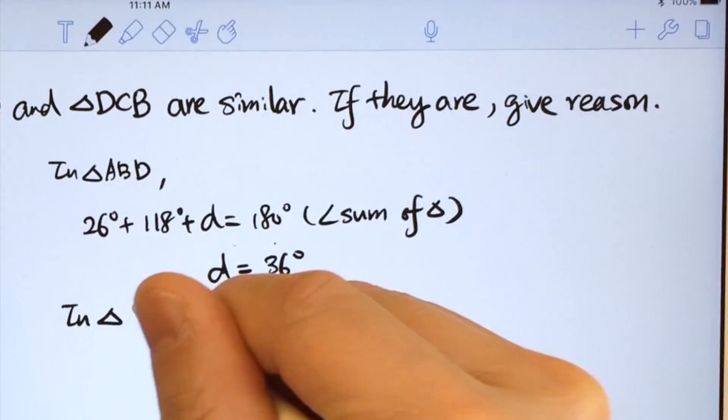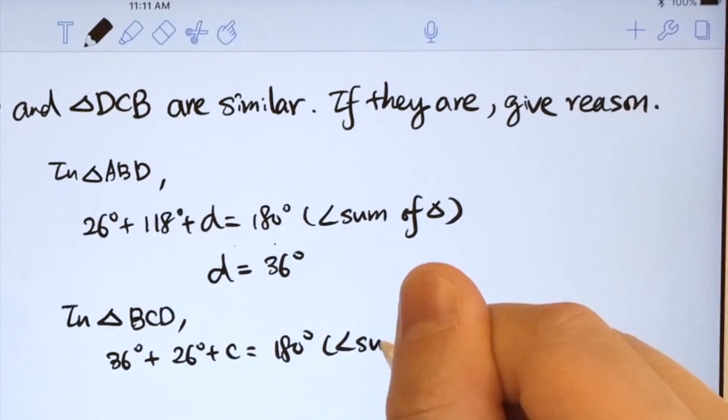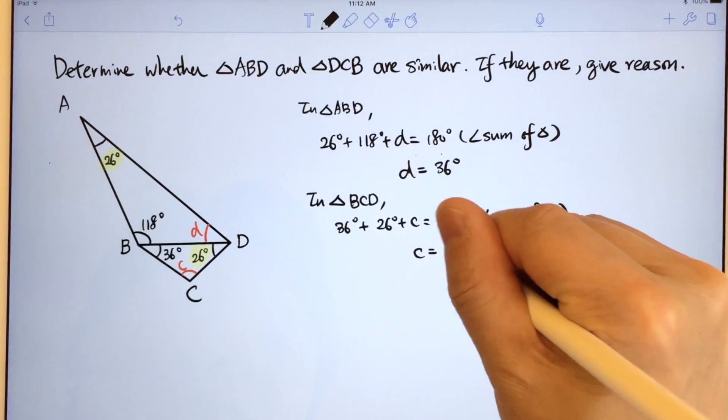In triangle BCD, the sum of all these angles is 180 degrees. The reason is angle sum of triangle. Therefore C is 118 degrees.